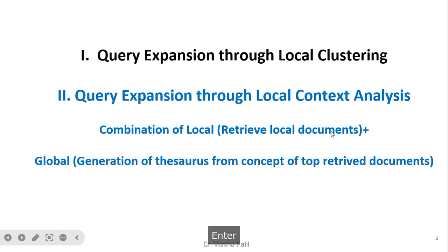Query expansion through local context analysis is a combination of local and global approaches. Local refers to retrieving local documents, and global refers to the generation of a thesaurus from the concept of top retrieved documents. Here we are not giving attention to individual query words but to the concept formed from the set of query words.